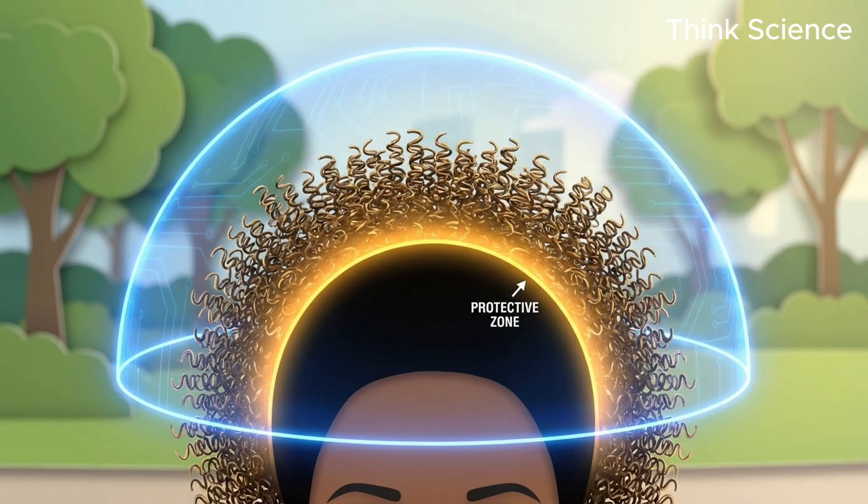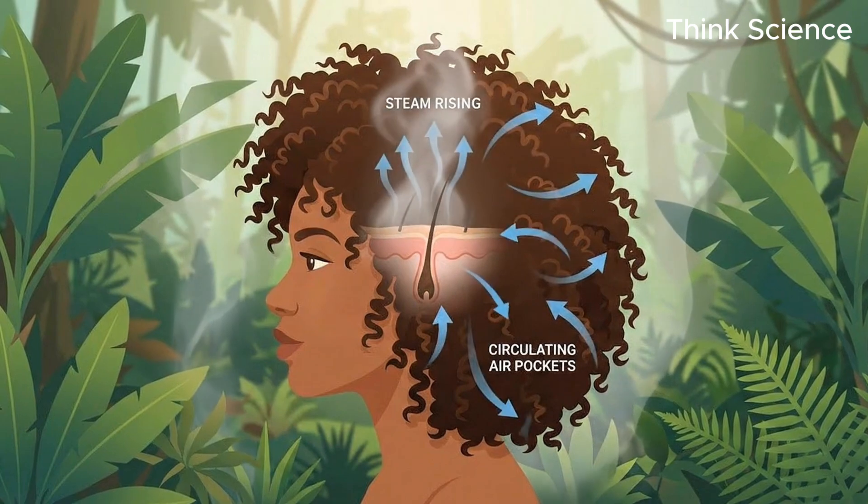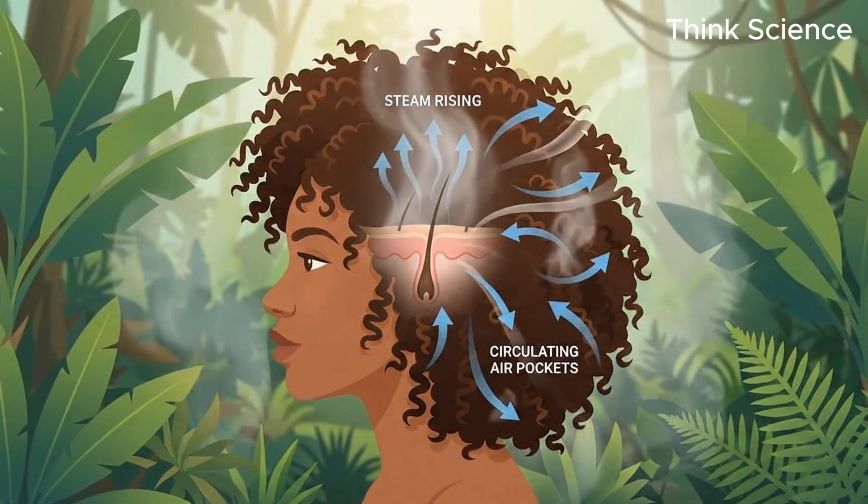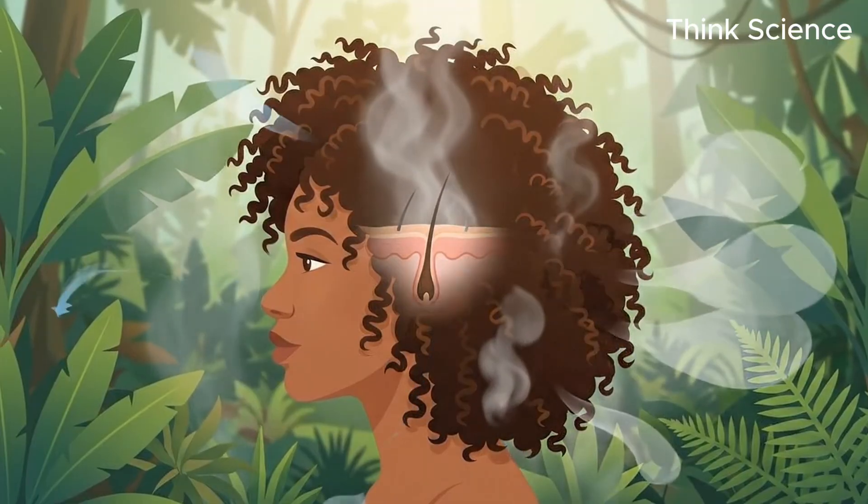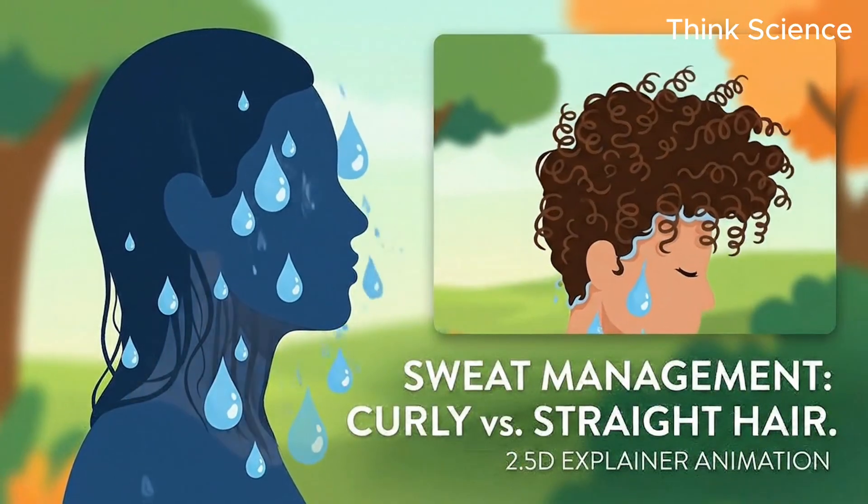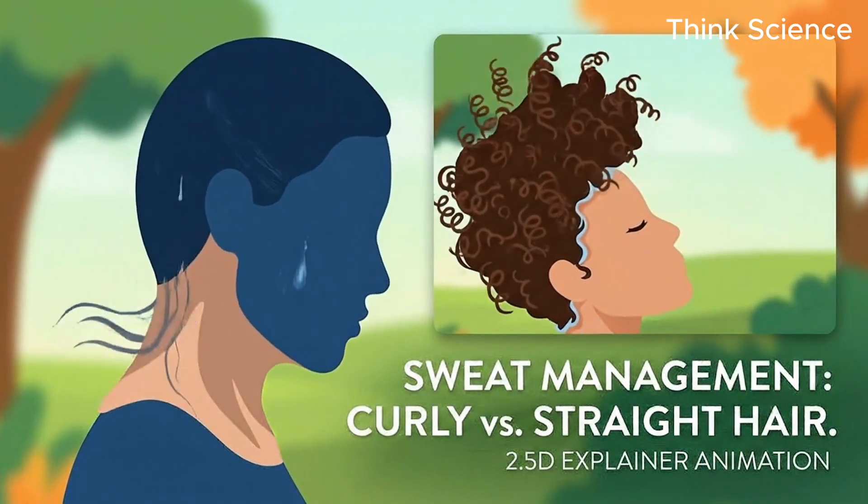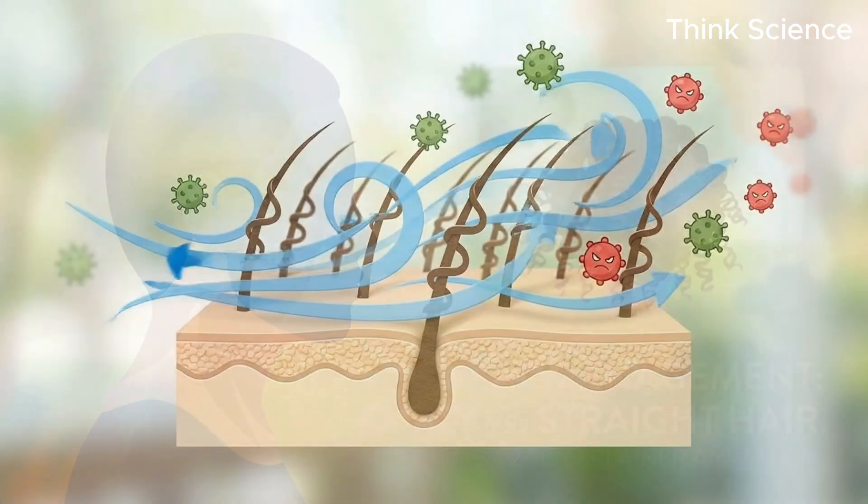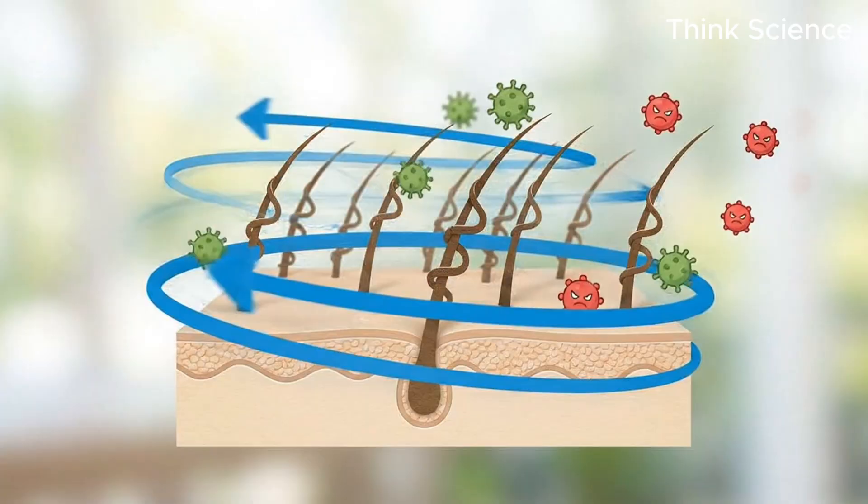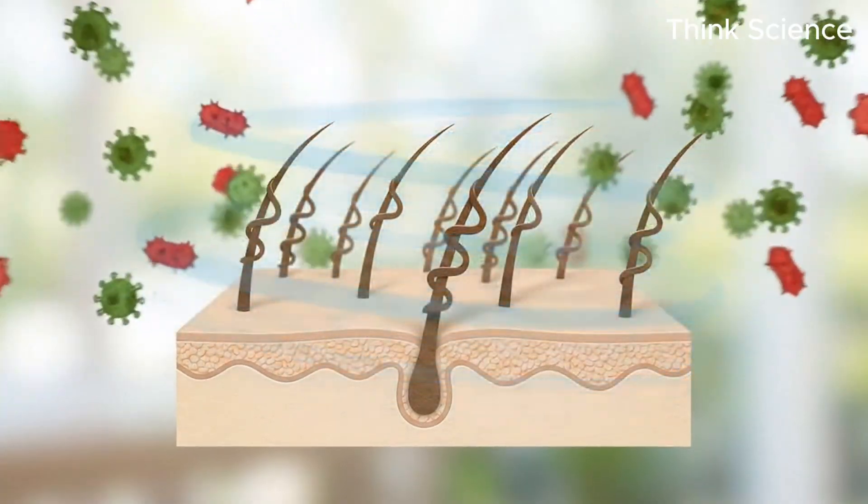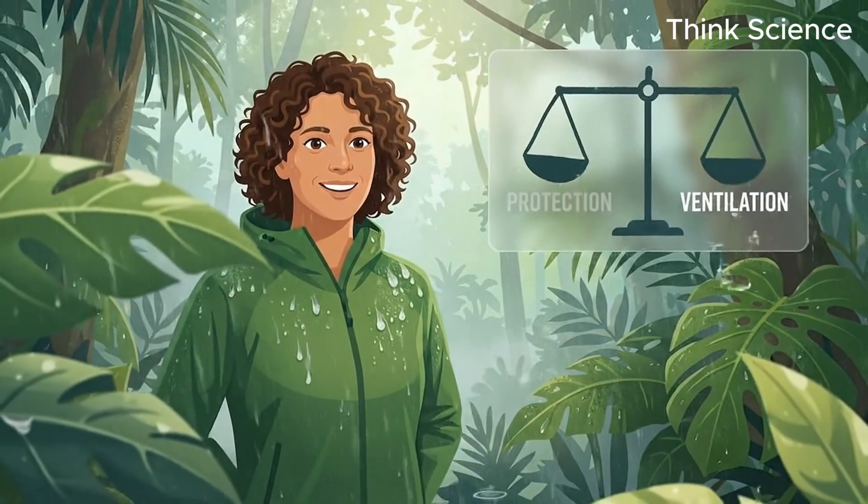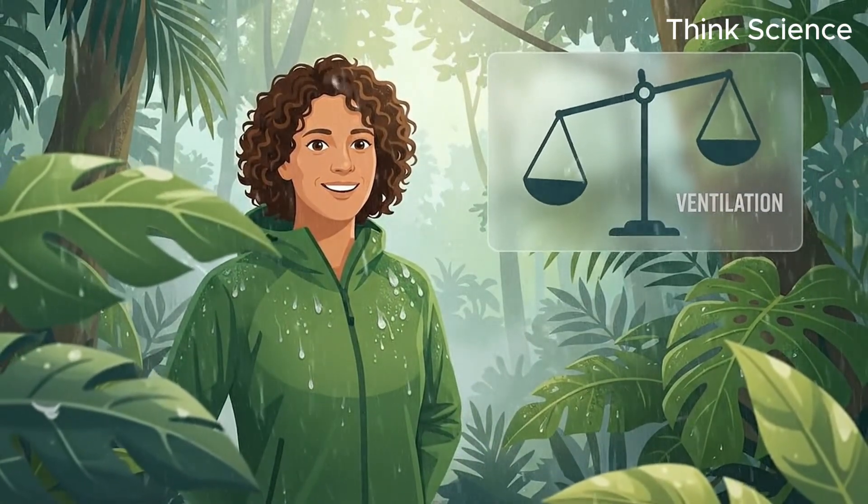Biologically, curly hair regulates temperature by creating a chaotic airspace. Unlike the organized tunnel of straight hair or the lofted mat of coily hair, curly hair creates irregular pockets of air. This is particularly effective in humid, tropical environments where sweat evaporation is difficult. The curls keep wet hair from plastering to the neck and scalp, allowing air to circulate and help dry the skin, preventing fungal infections and bacterial growth that thrive in warm, moist conditions. It is a texture designed for environments that are hot but wet, requiring a balance of protection and ventilation.